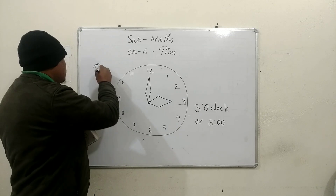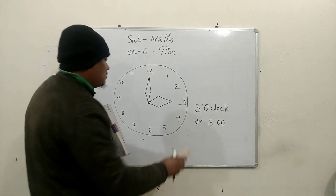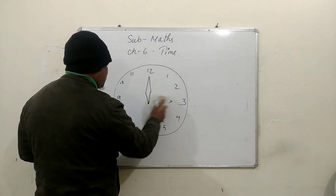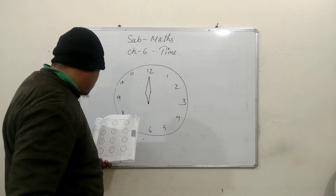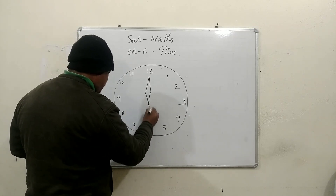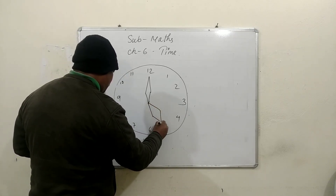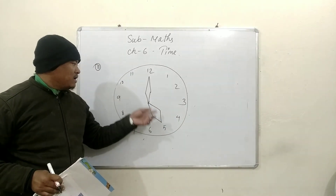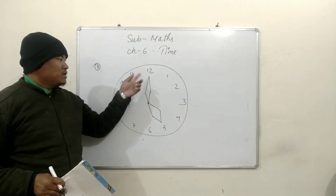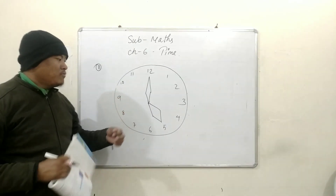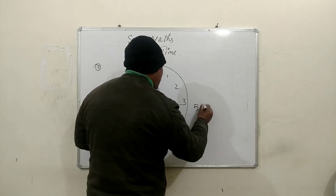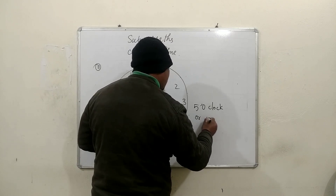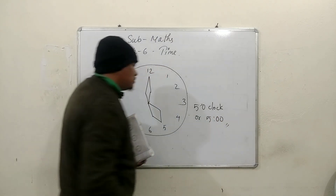Now come to question number 2. The hour hand is exactly on 5 and the minute hand is exactly on 12. So the time is 5 o'clock. We can also write this in this form.